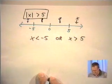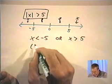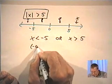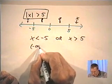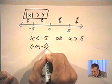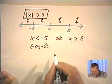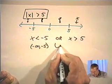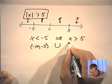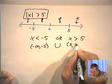If I wanted to put this in interval notation, the numbers x less than negative 5 is the interval from negative infinity to negative 5. And remember, when we do OR inequalities, that means union with this interval over here.